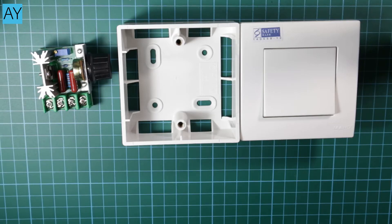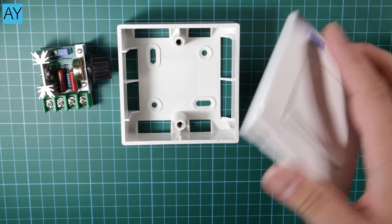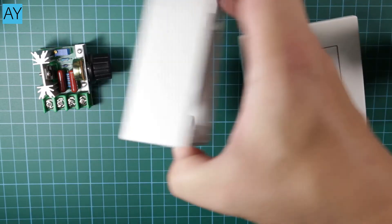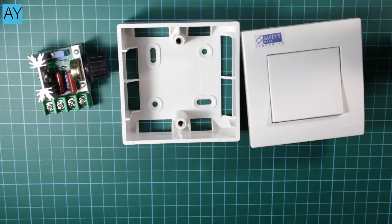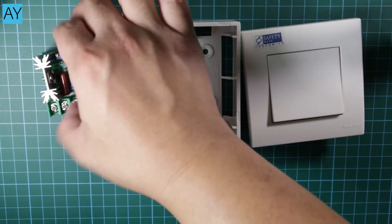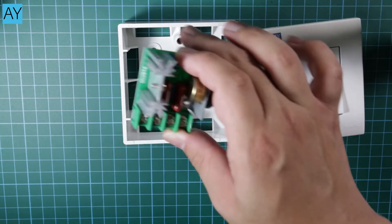For the switch and enclosure, I'm going to be using one of these wall sockets and one of these gang boxes. Now you don't have to use exactly what I'm using. You just have to ensure that your triac module and your switch will be able to fit in the enclosure nicely.